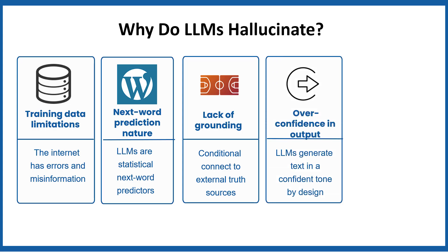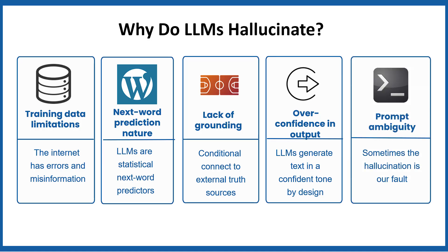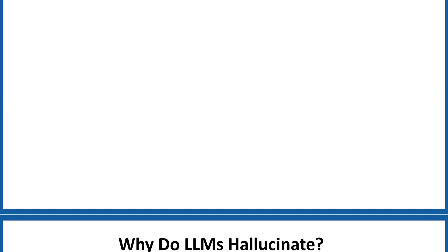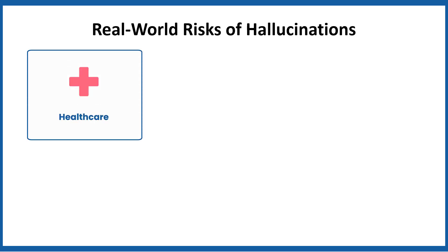Overconfidence in output: LLMs generate text in a confident tone by design. Even if unsure, they won't safeguard much. This amplifies hallucinations because users trust the polished language. Prompt ambiguity: sometimes the hallucination is our fault. If a question is vague or misleading, the model may fill in the blanks incorrectly. Hallucinations in AI don't always carry the same level of risk — it depends on where they happen. In healthcare, if an AI makes up a drug combination that isn't FDA approved, the consequences could be life threatening. That is why the risk here is critical.